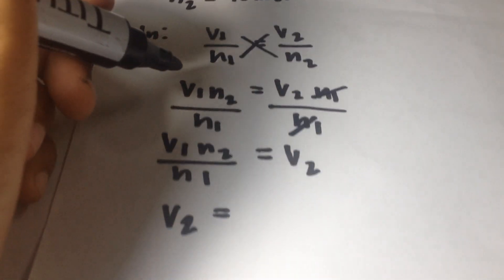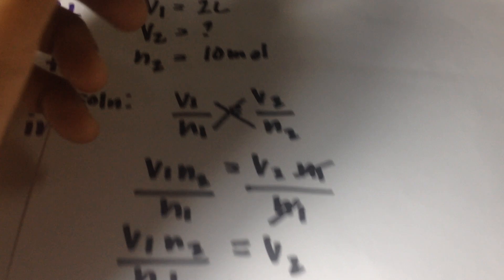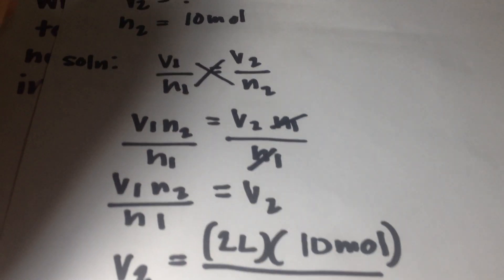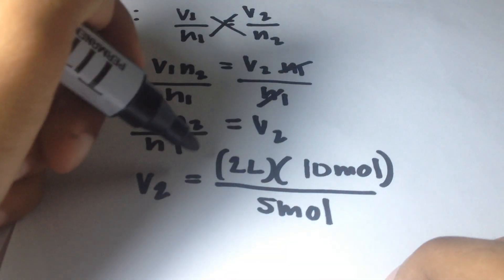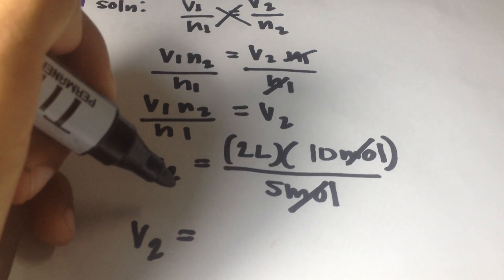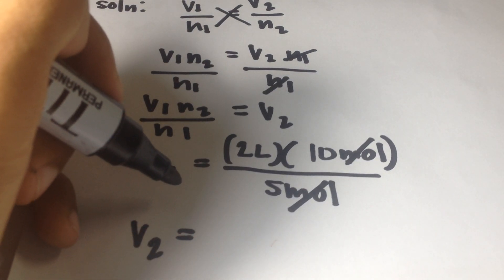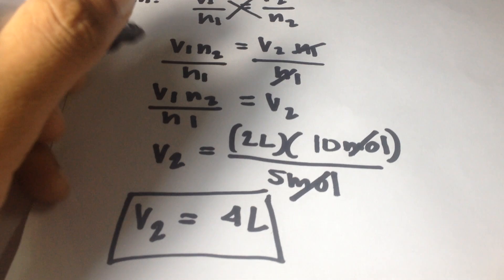Volume 2 equals V1 which is 2 liters, times N2 which is 10 moles, divided by N1 which is 5 moles. Cancel out moles and moles, leaving liters. Volume 2 equals 2 times 10 divided by 5, which equals 4 liters. That is the final answer.